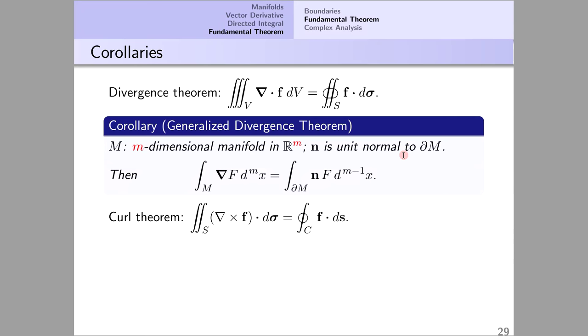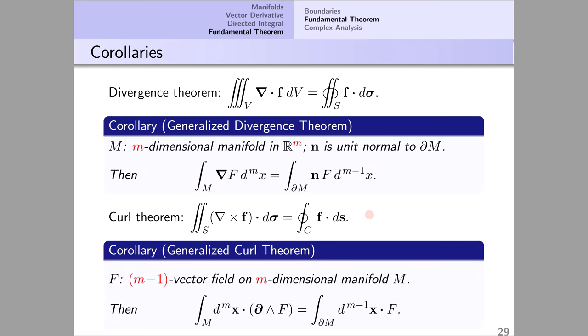Curl theorem. Here is the standard formula for it in R3 and here is the generalization. An M-1 vector field on an M dimensional manifold. F is a one-vector, that is to say a vector field on a two-dimensional manifold S. The generalization then of this formula is this.